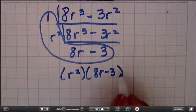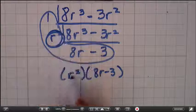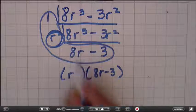In other words, we're doing the reverse of the distributive property. The r squared comes from up here, and the 8r minus 3 comes from right here. Let's do another one.